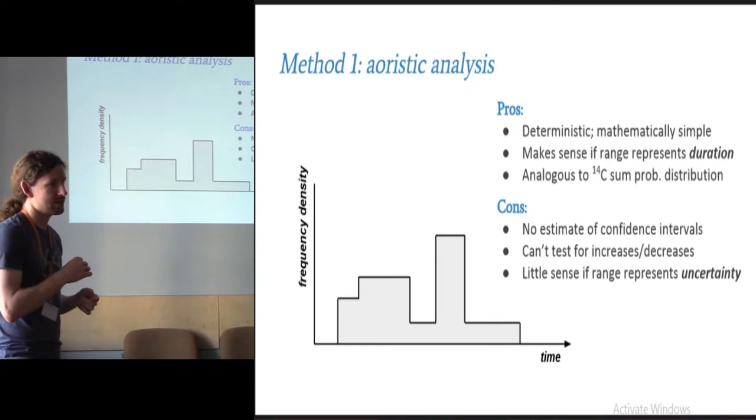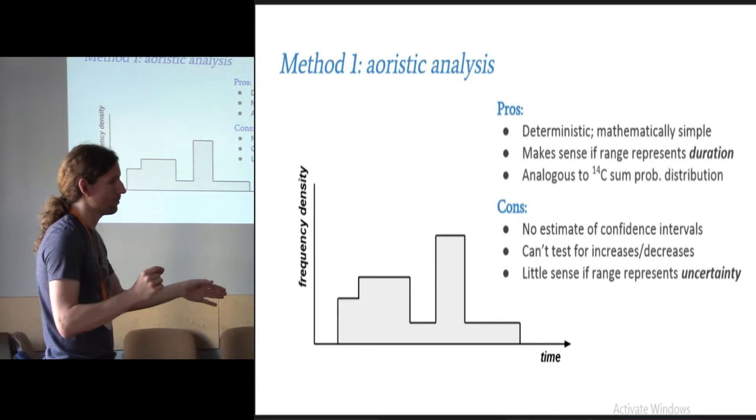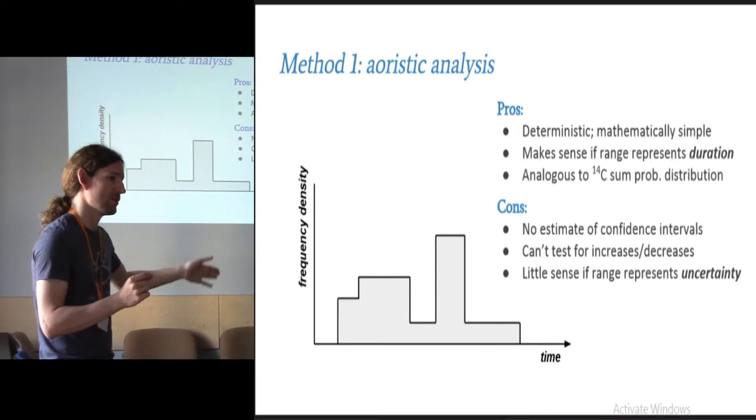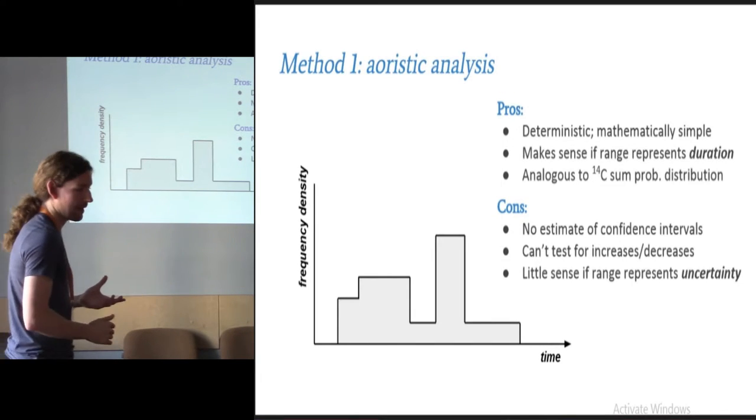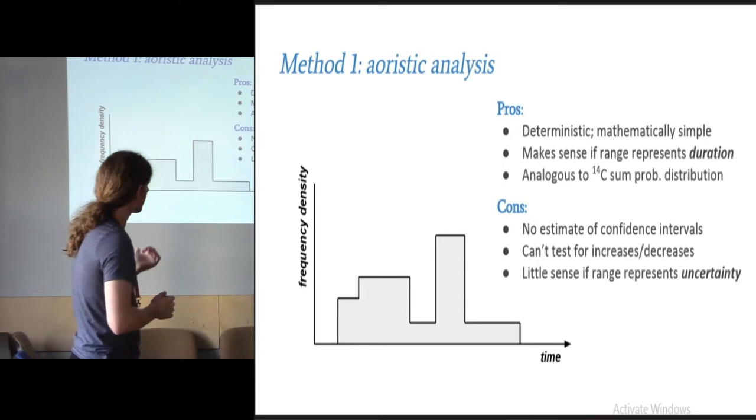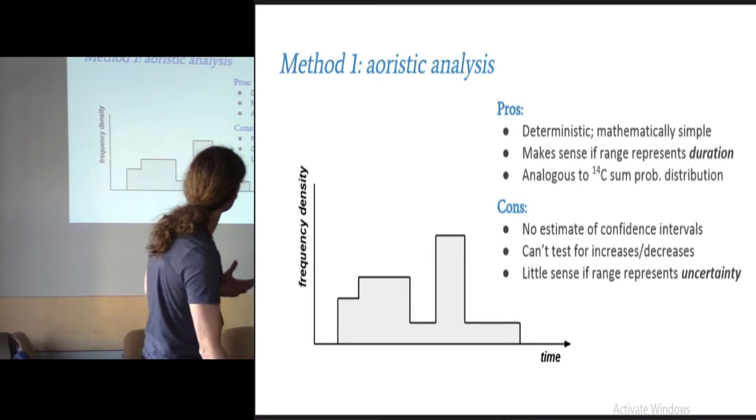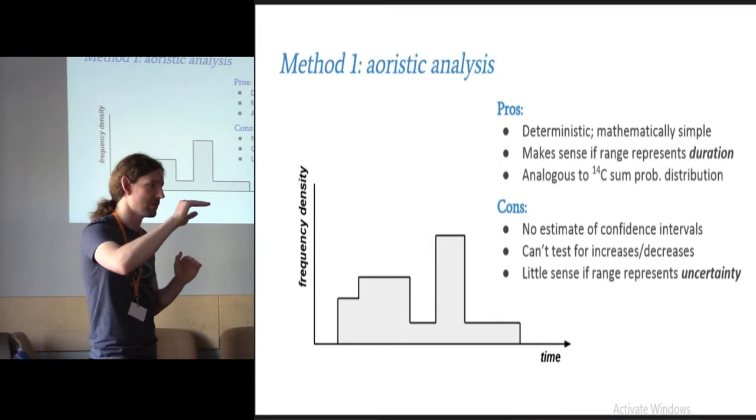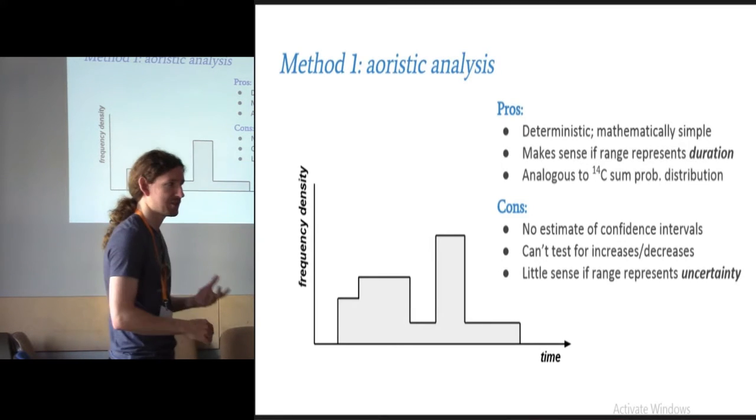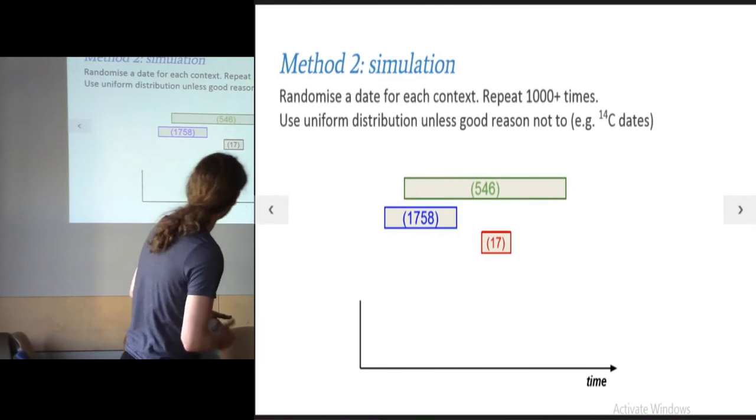If, however, you assume that it represents uncertainty, that the context formed at some point, we just don't know whether it was after the dissolution in 1538 and before the Great Fire of London, then it makes a little bit less sense. But one of the biggest problems here is you can't estimate confidence intervals. You have no idea how reliable this distribution is. And you can't test for increases or decreases, which is often what we're actually interested in. If you're testing a historical or an archaeological model, that's often actually what you're looking at. And I'll come back to that point later.